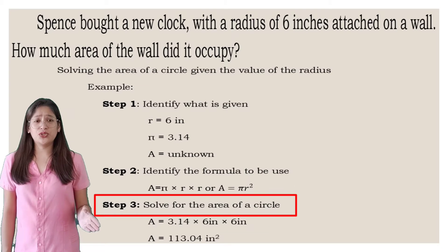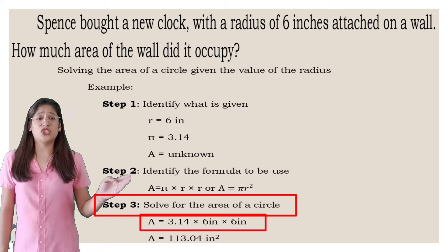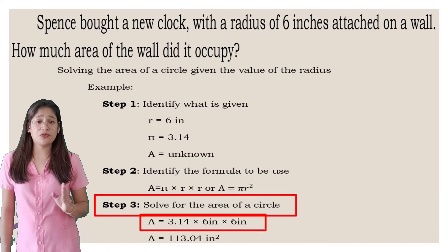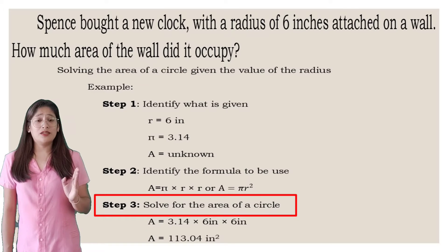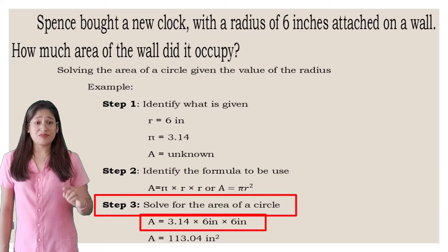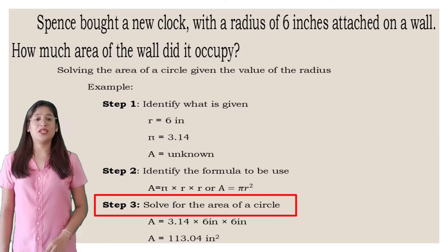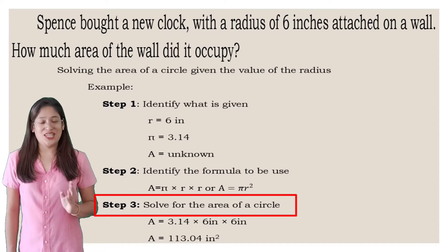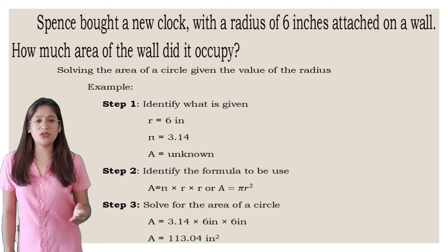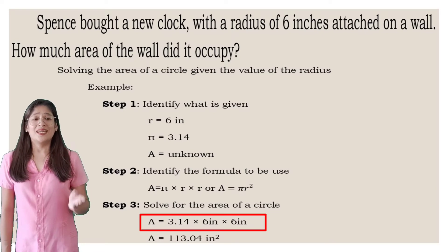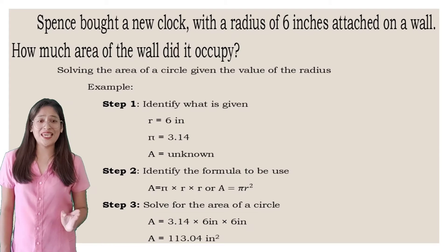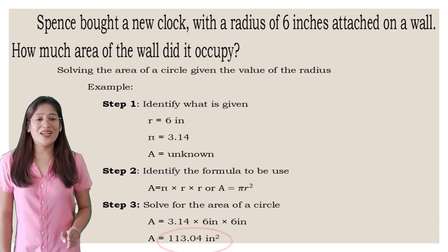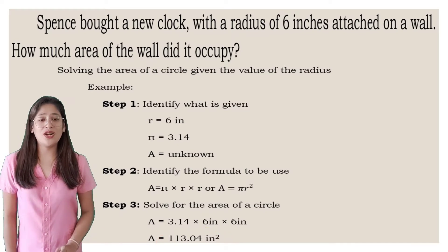Area is equals to pi r squared. We will substitute it: area is equals to pi, the equivalent is 3.14, multiplied by the radius of 6 inches squared — meaning 6 inches multiplied by 6 inches. So area is equals to 3.14 multiplied by 6 inches, and then multiplied again by 6 inches. The answer is 113.04 inches squared.